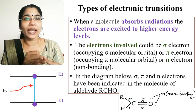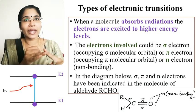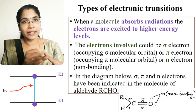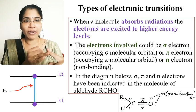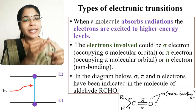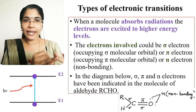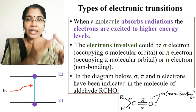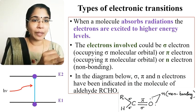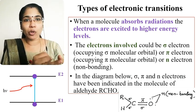For example, aldehydes (RCHO) contain a C double bond O. This molecule has a sigma bond, a pi bond, and non-bonding electrons — these are the three types of electrons present.